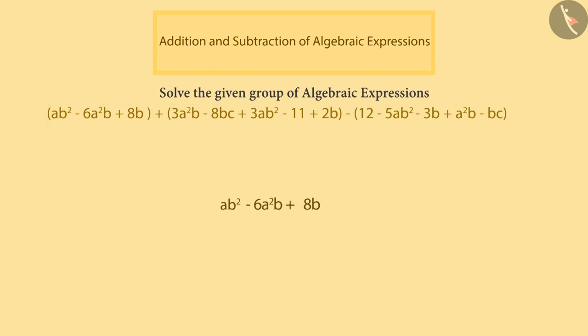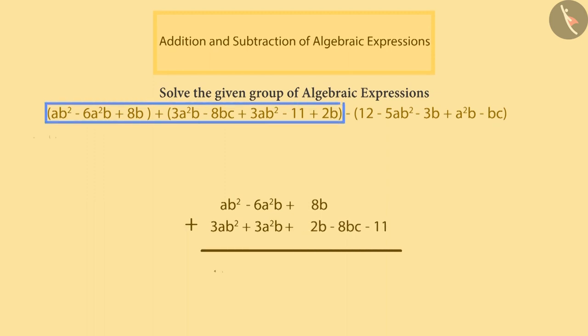Let's first write the first expression. Now while writing the expression which is to be added, we should note that we write the like terms one below the other. Thus, we get the sum of the first two expressions.